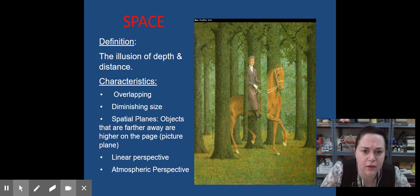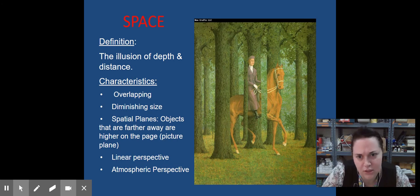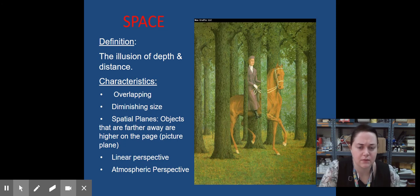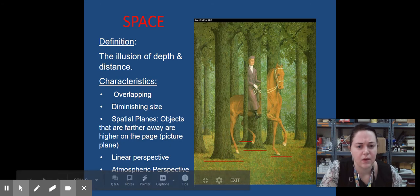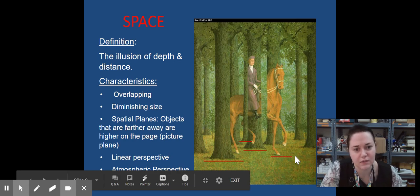As you look at the picture here, this picture demonstrates the first three characteristics of space: overlapping, diminishing size, and spatial planes. Where do you see these characteristics? You'll notice if you look at the red blinds below, the trees are an excellent indication of space.